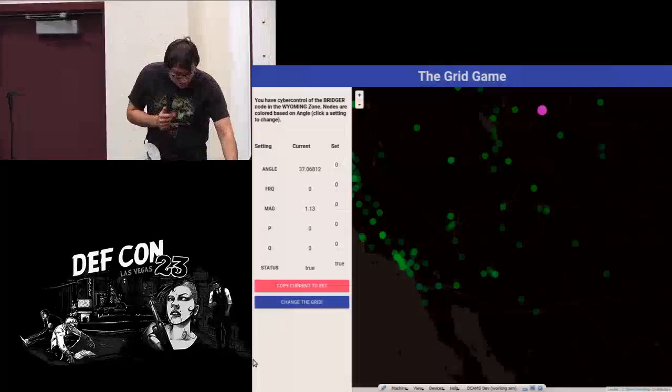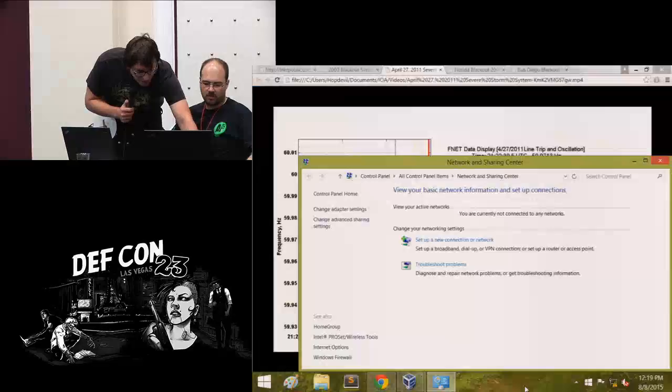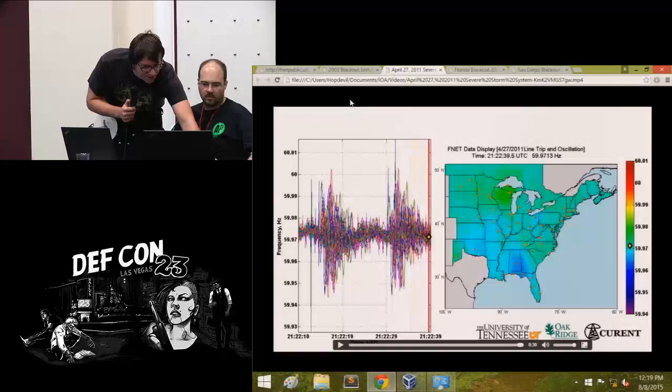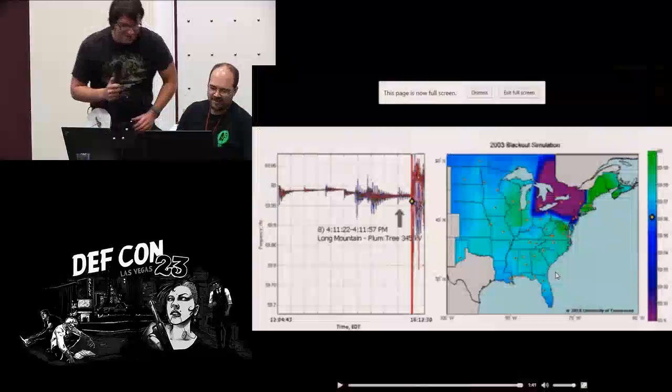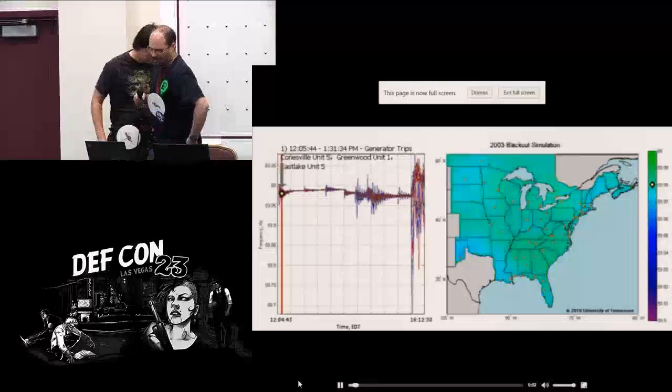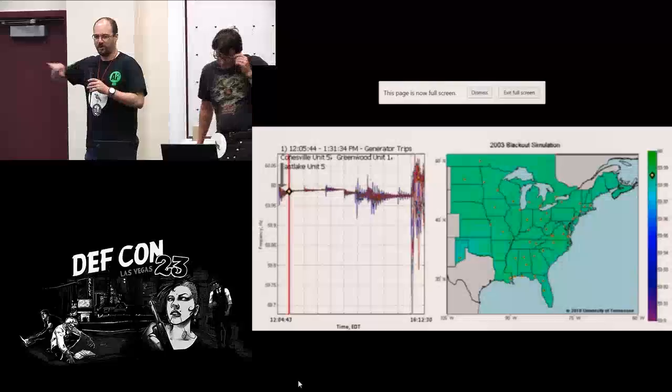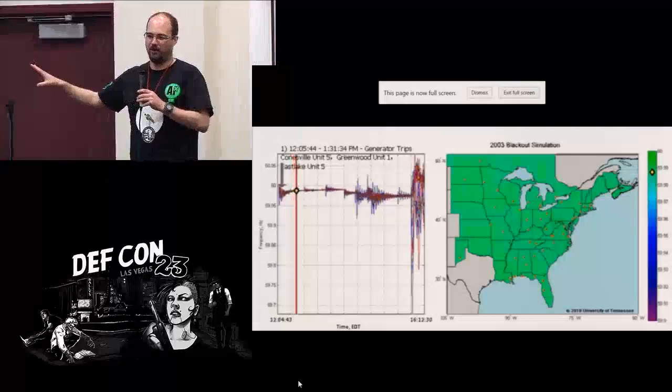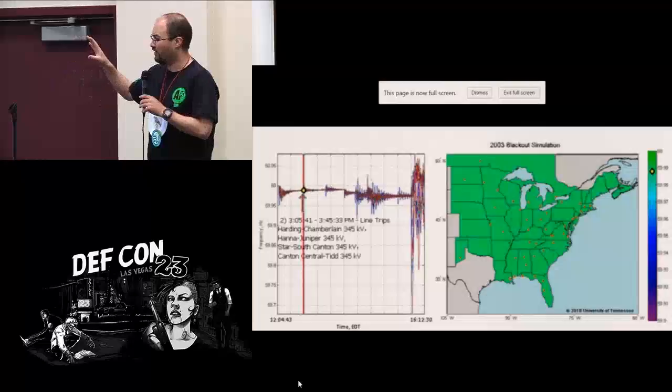And actually I think we'll first start out with a simulation of the 2003 grid event. And I'll let Gerald talk about this one because it's his baby. So the 2003 northeast blackout was really what started all of this research. Kind of kicked it off. Because this left 50 million people without power. It actually affected what the earth looked like from space. It was kind of cool.